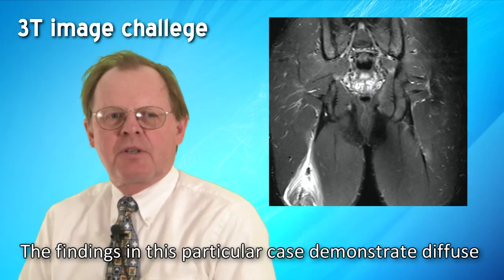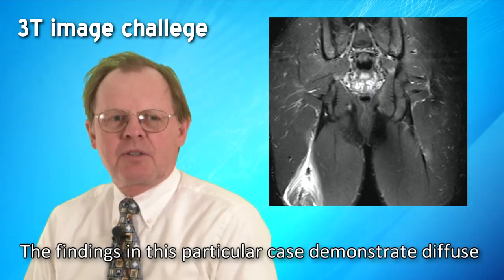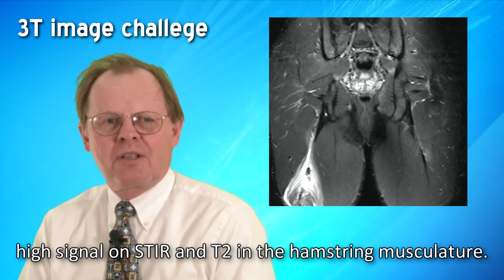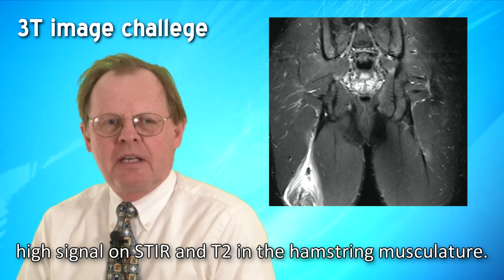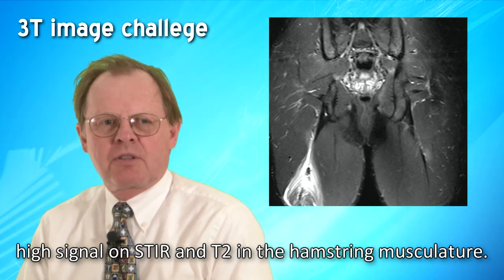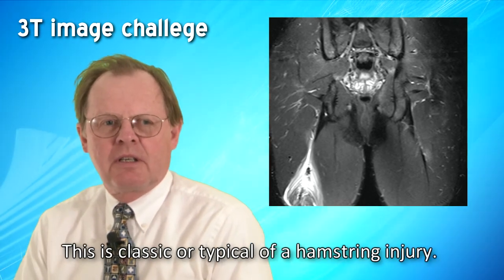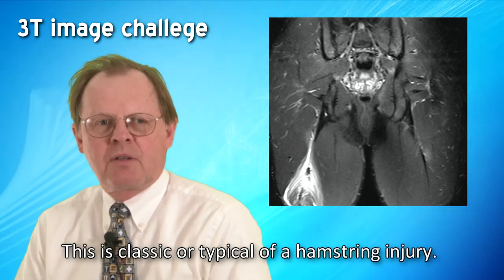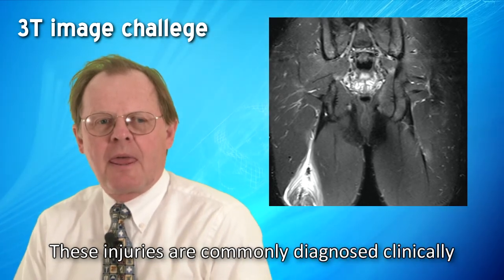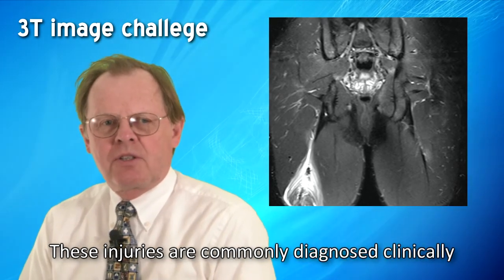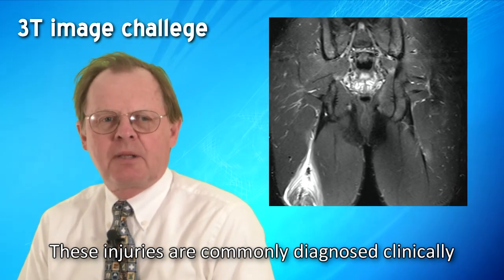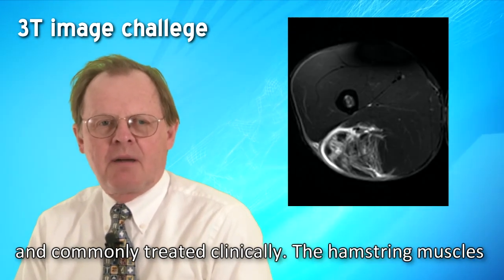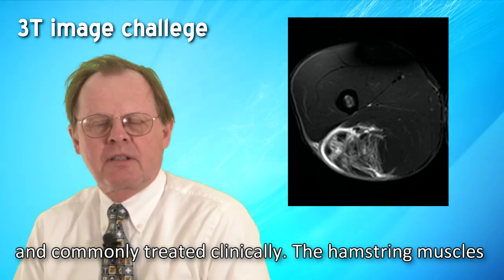The findings in this particular case demonstrate diffuse high signal on STIR and T2 in the hamstring musculature. This is classic or typical of a hamstring injury. These injuries are commonly diagnosed clinically and commonly treated clinically.